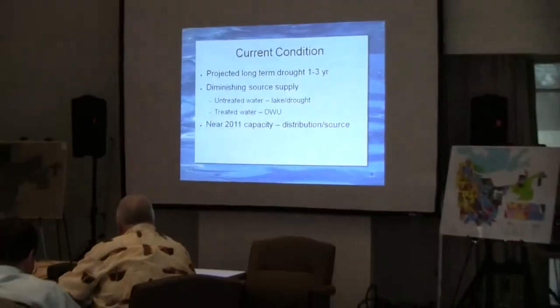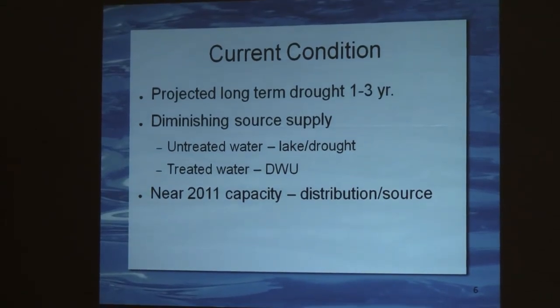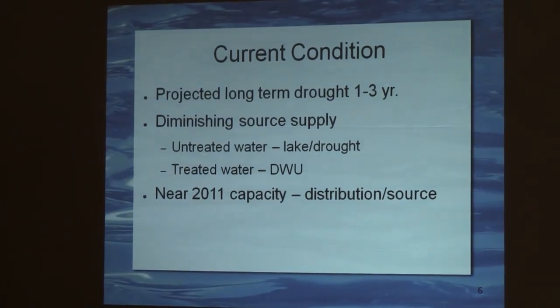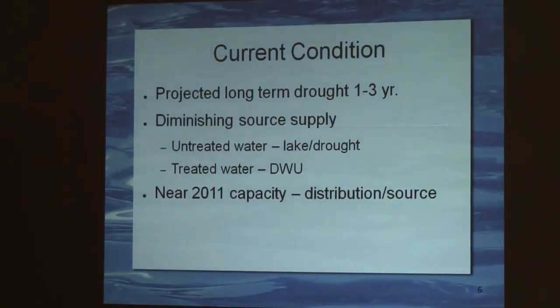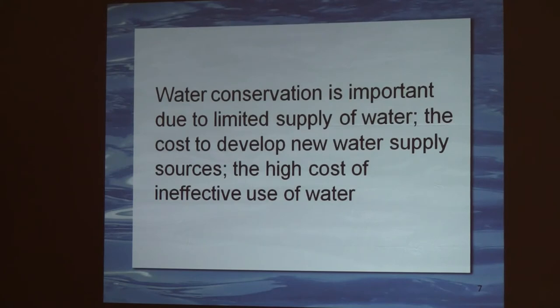The untreated water from the lakes and Dallas Water's ability to deliver treated water to us are our two dimensions of supply. We're at near capacity on our distribution and source at this point. Distribution can carry up to 38 MGD. The source is what we're talking about regarding supply. On distribution, we do 38 MGD high, plus 29 MGD from treated water, so we're okay on distribution as far as delivering water without having to buy additional.